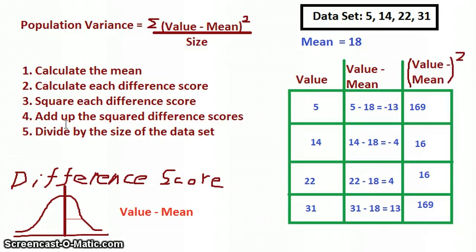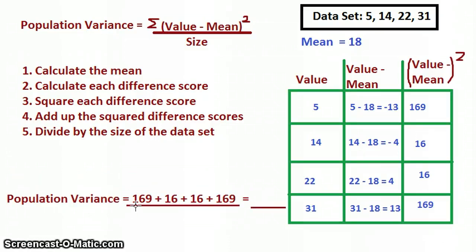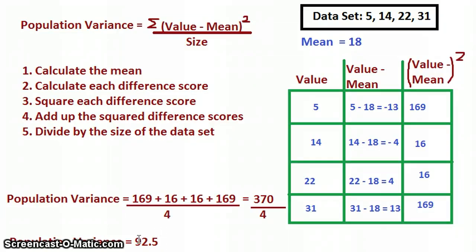Now step four: add up the squared difference scores. So we add 169 plus 16 plus 16 plus 169, and that equals 370. Then step five: divide by the size of the data set. We have four values, so it's 370 divided by 4, and that comes out to be 92.5. So for our data set, the mean is 18 — our measure of central tendency — and our variance is 92.5, which gives you an idea of how much variability there is.